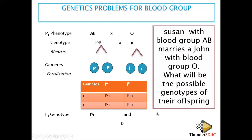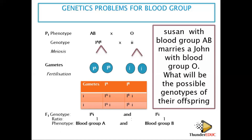The F1 genotypes are I-A i and I-B i in a 1:1 ratio. The phenotypes are blood group A and blood group B — you do not say homozygous or heterozygous for the phenotype, because you cannot see that from the outside. What we see externally is blood group A and blood group B.